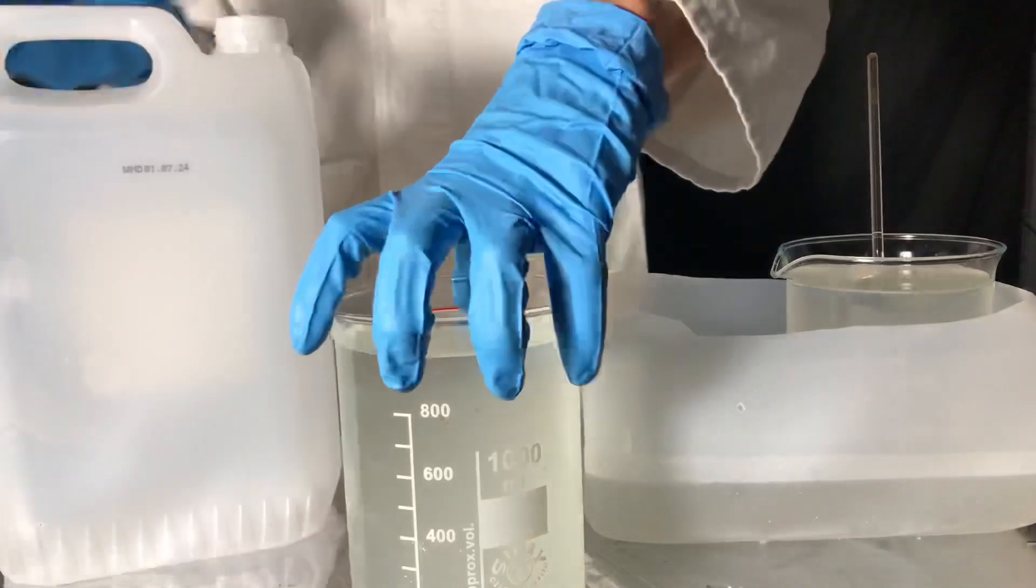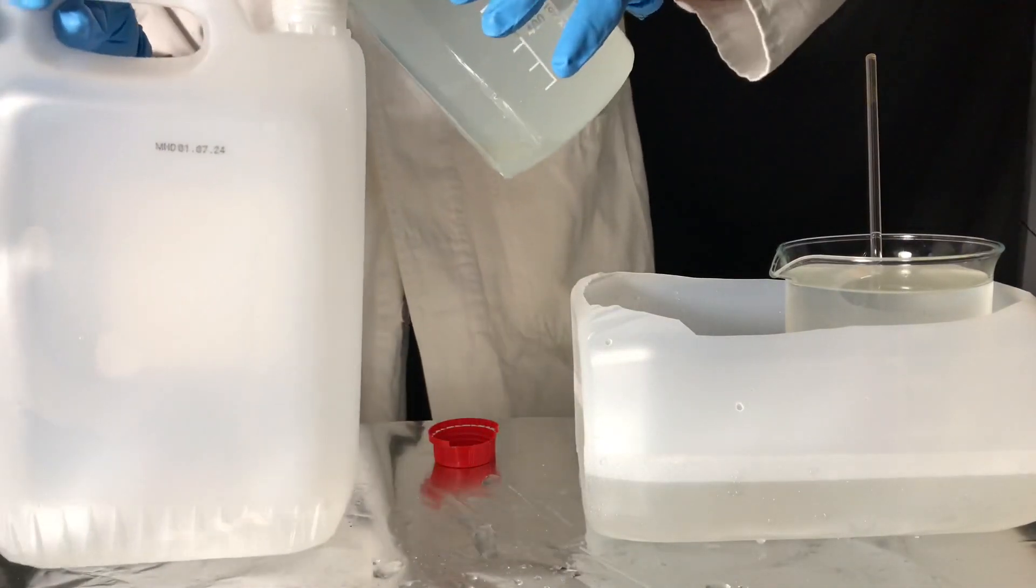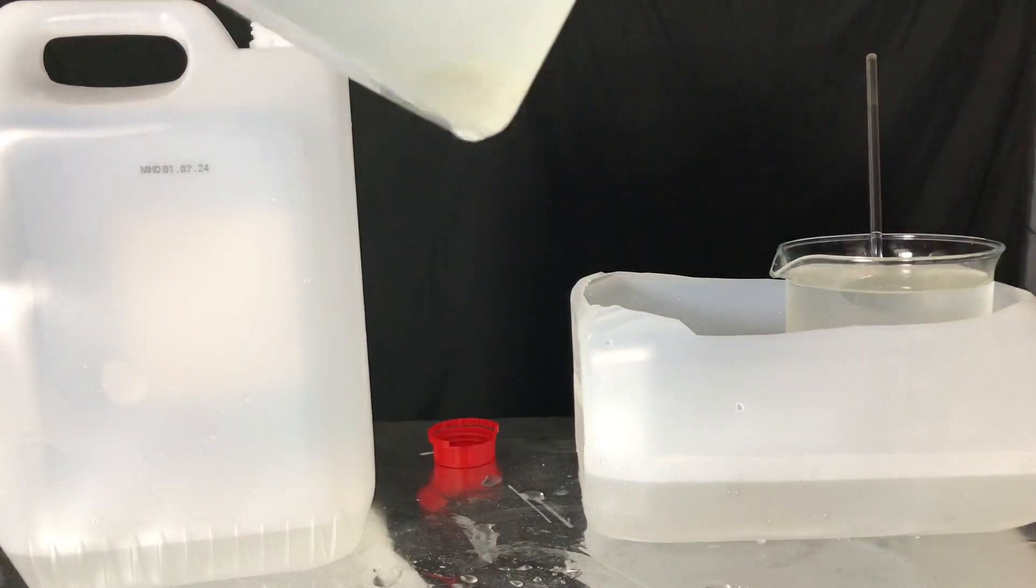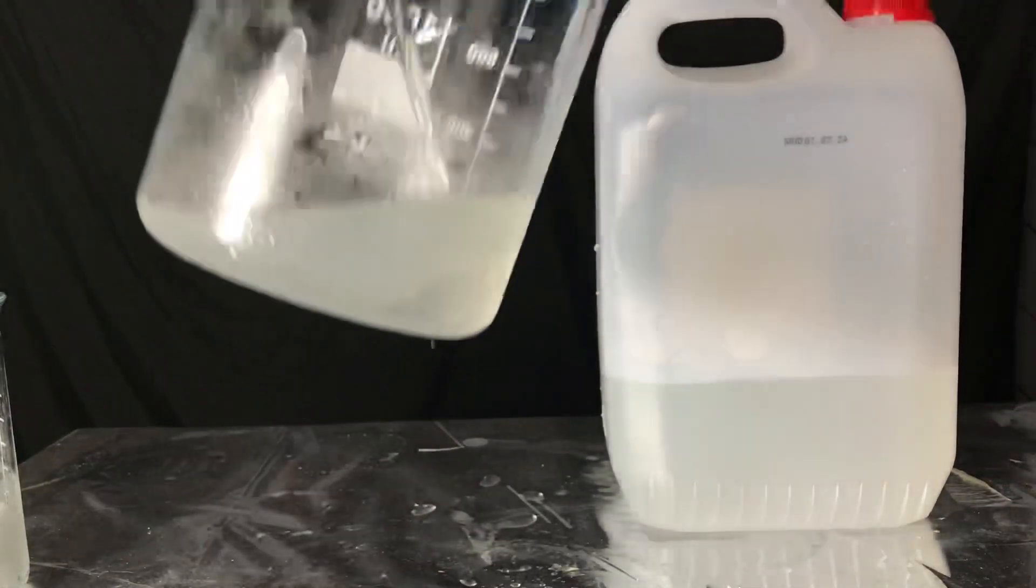The top layer was then decanted off into a canister and we let it stand in the fridge for another day to get even more chloroform out of solution. What you see on the bottom of the beaker is a nice blob of chloroform.